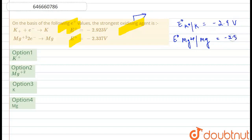So if you look here, out of these two values, the reduction potential of E⁰ Mg²⁺/Mg is a greater value, which is -2.3 volts. Now, since this value is greater than the value of E⁰ K⁺/K, it means that it is a better oxidizing agent in comparison to K⁺ and K.